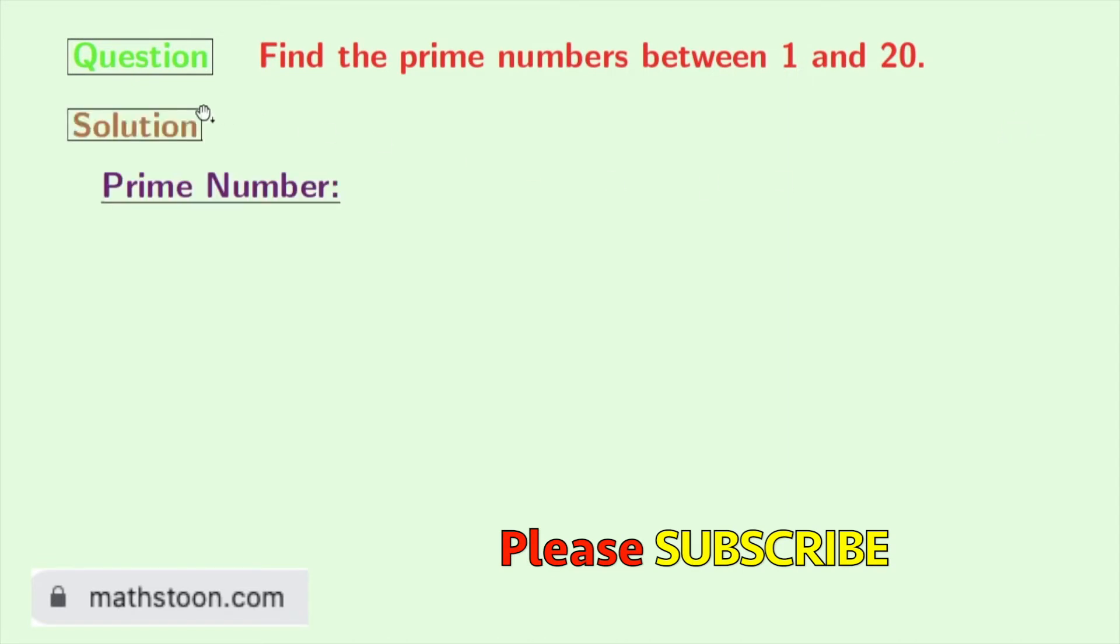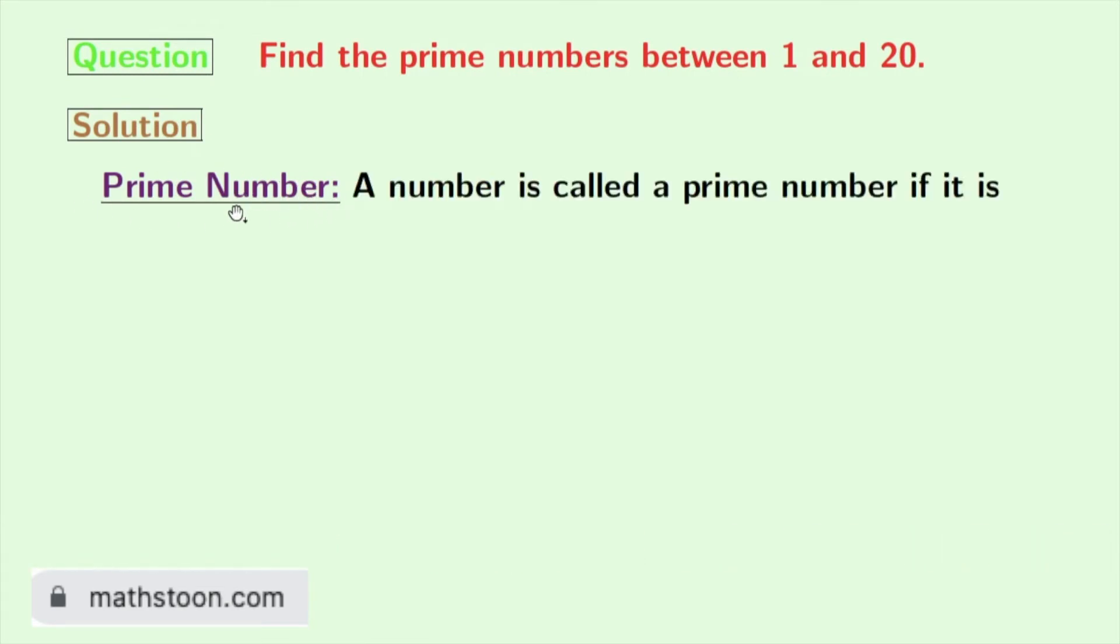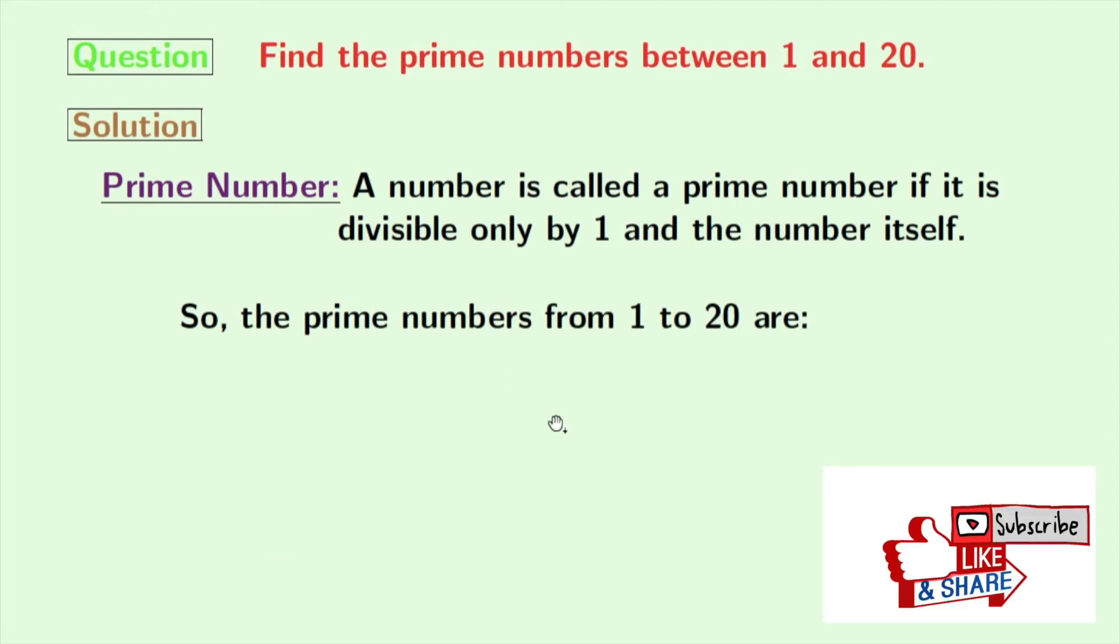Let us first understand the definition of a prime number. We will call a number a prime if the number is divisible only by 1 and the number itself. So according to this definition, the prime numbers between 1 and 20 are: